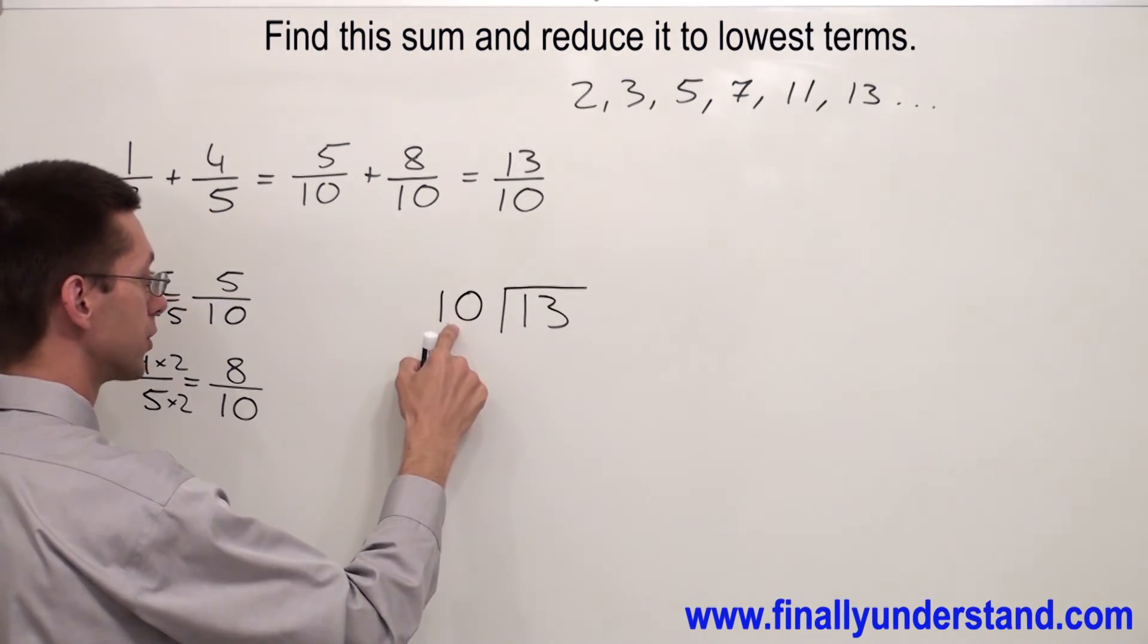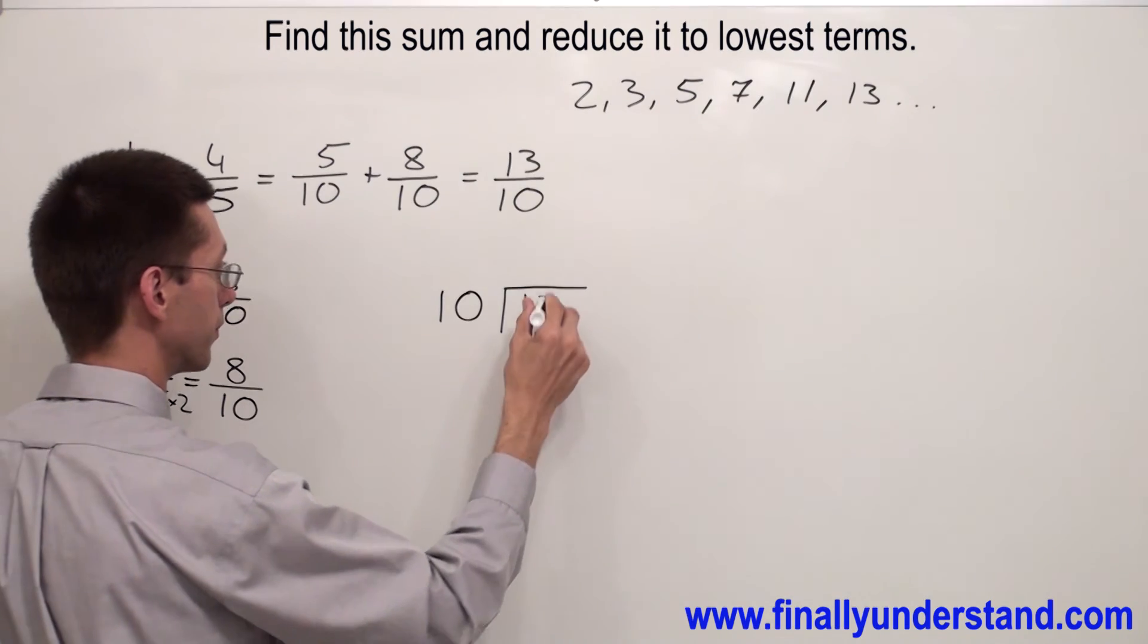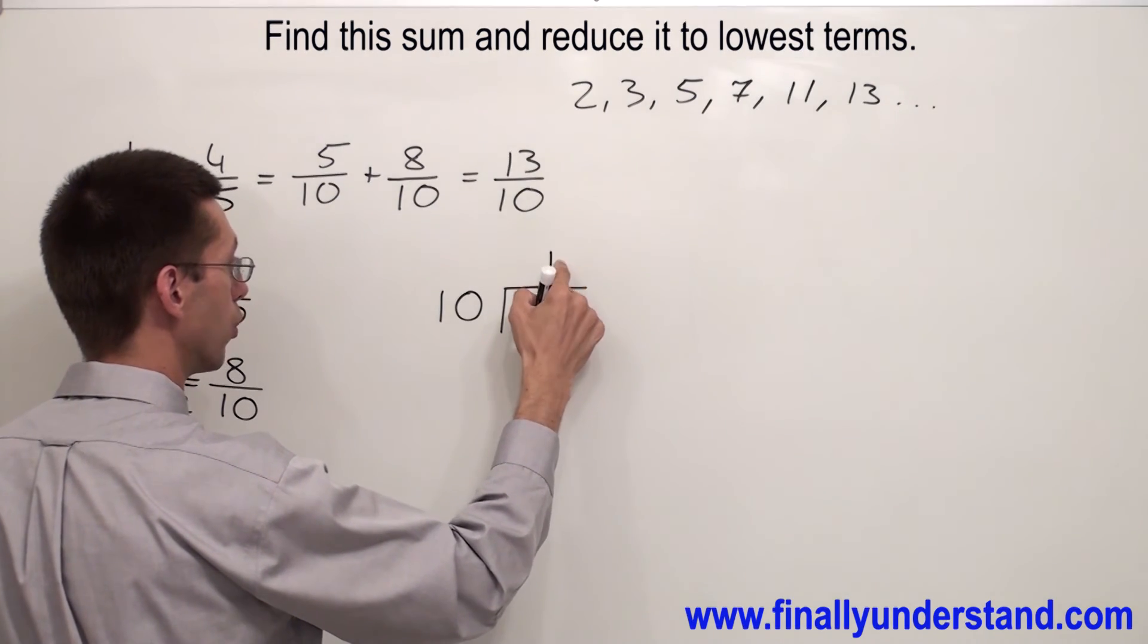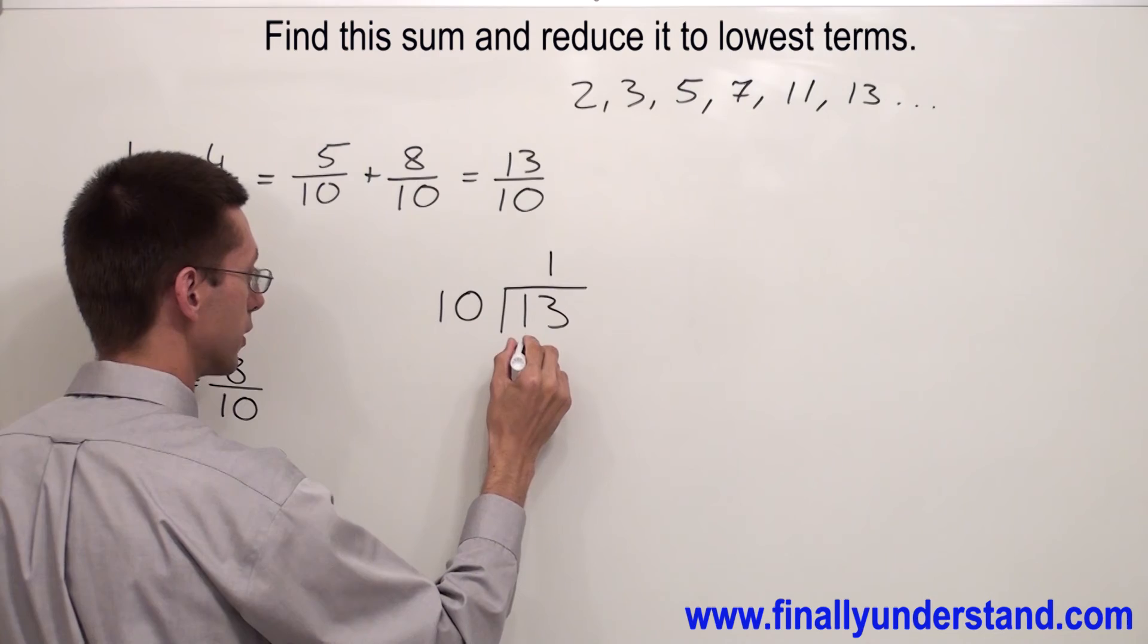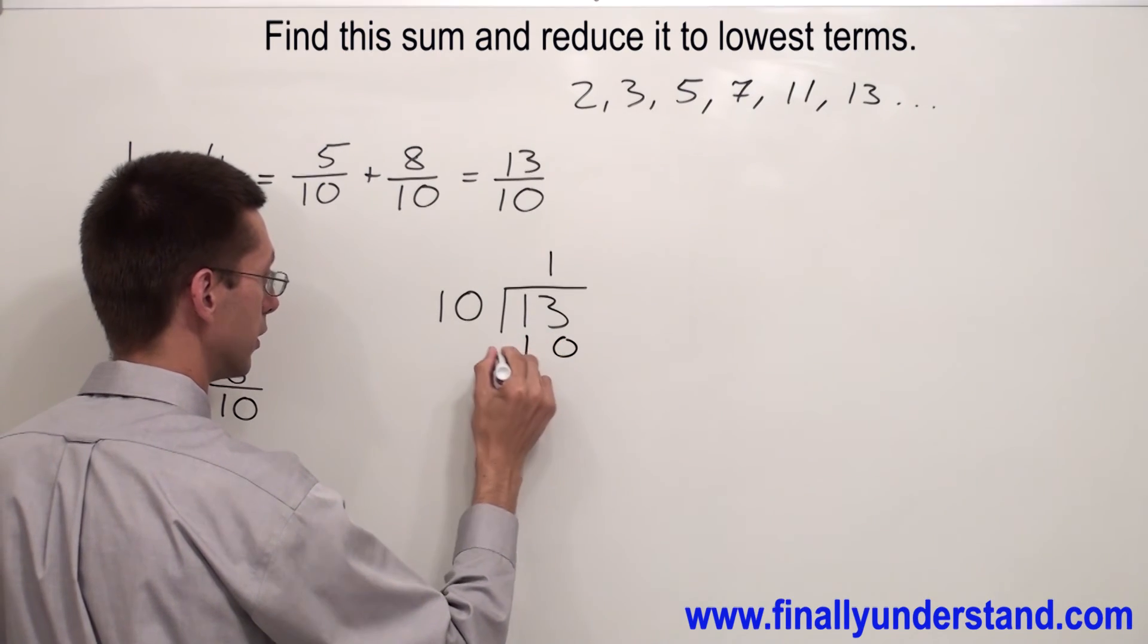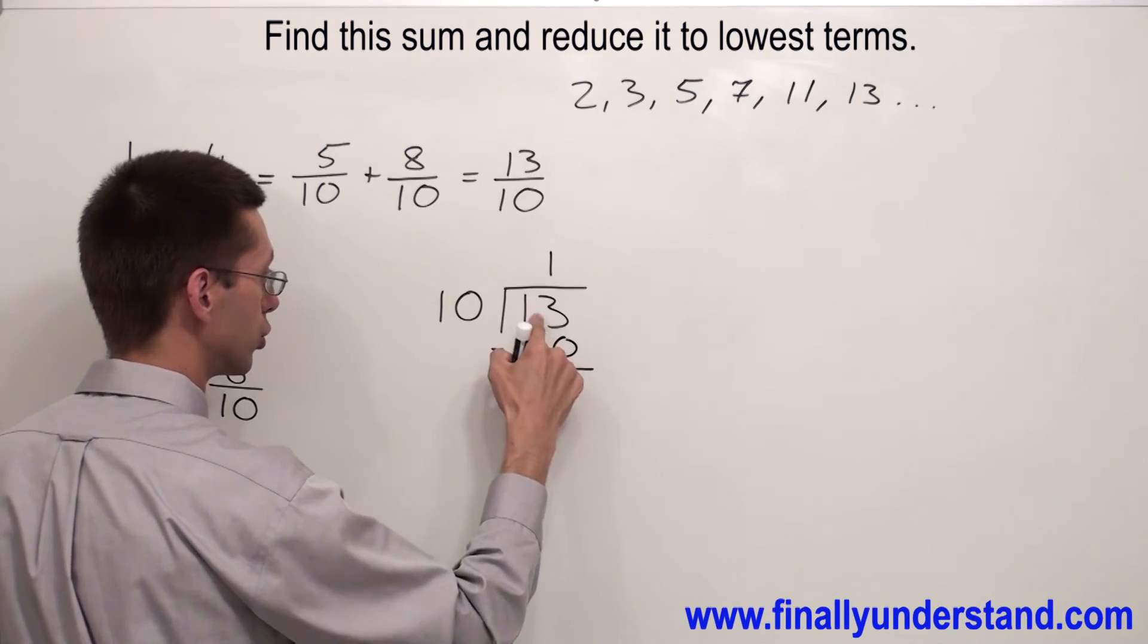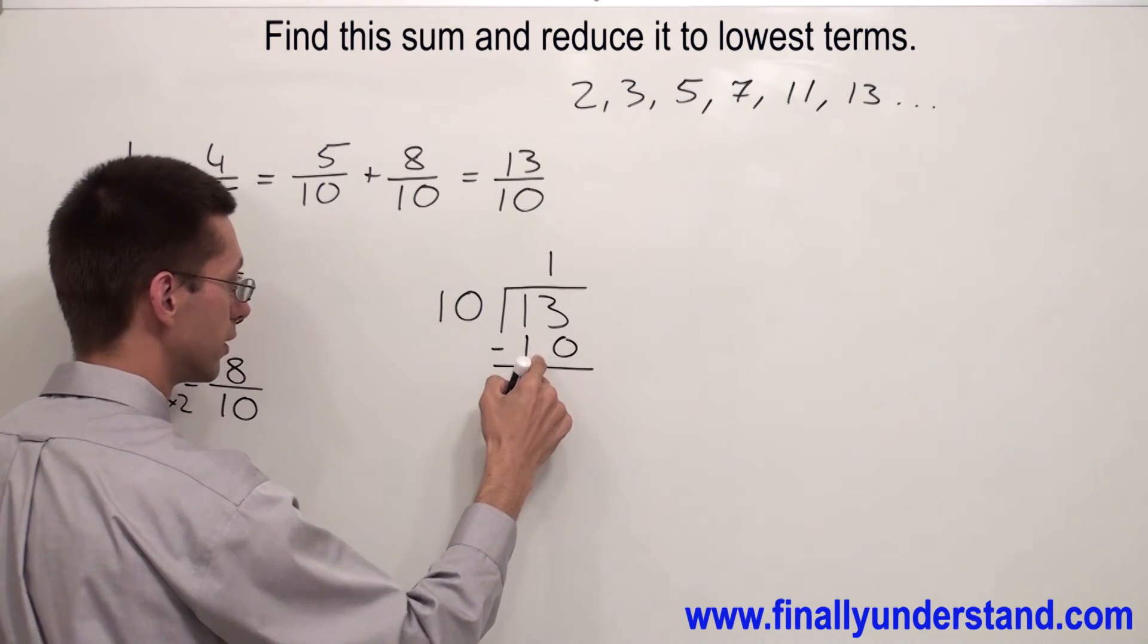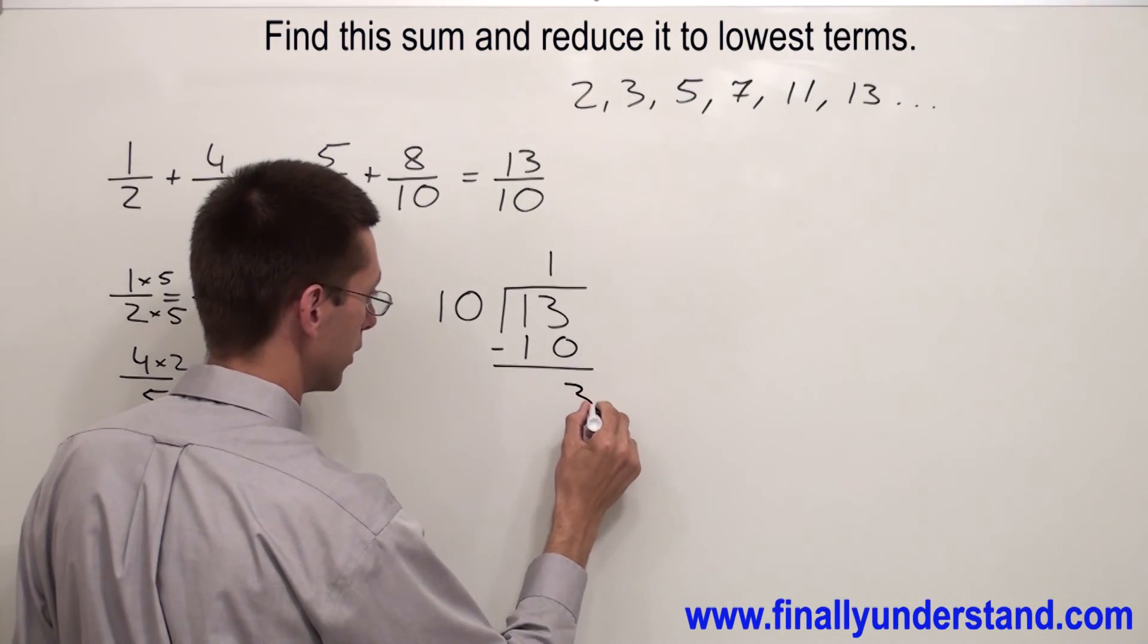How many times 10 goes into 13? 1. 1 times 10 gives me 10. Subtract 13 minus 10 gives me 3.